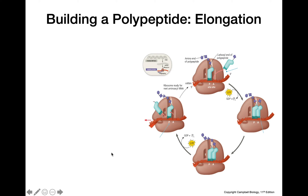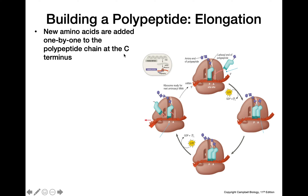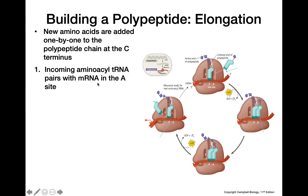Moving on to elongation. New amino acids are going to be added one by one to the polypeptide chain at the C terminus. The C terminus is the end of the amino acid that has the free carboxyl group, which we learned about in the video on protein structures. The incoming aminoacyl tRNA is going to pair with the mRNA — the anticodon will base pair with the codon in the A site.